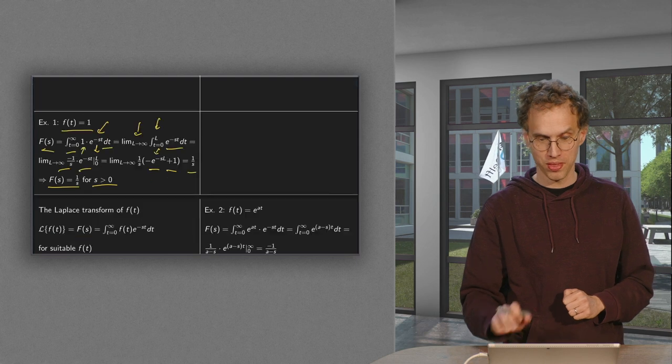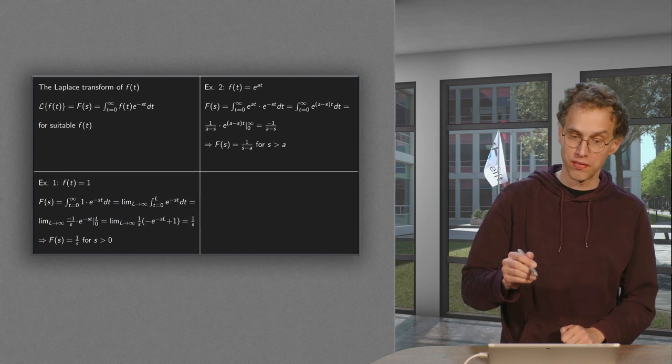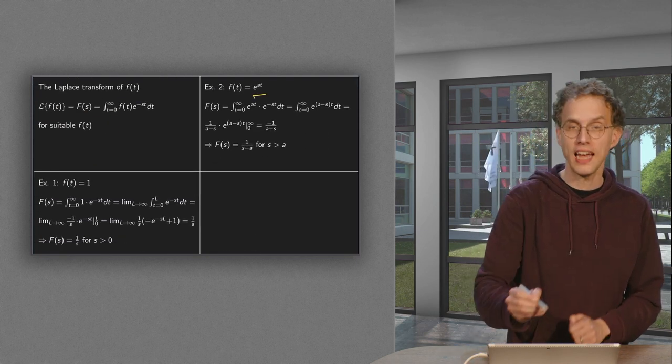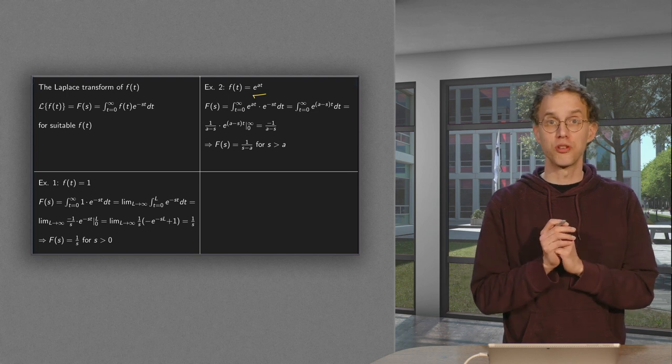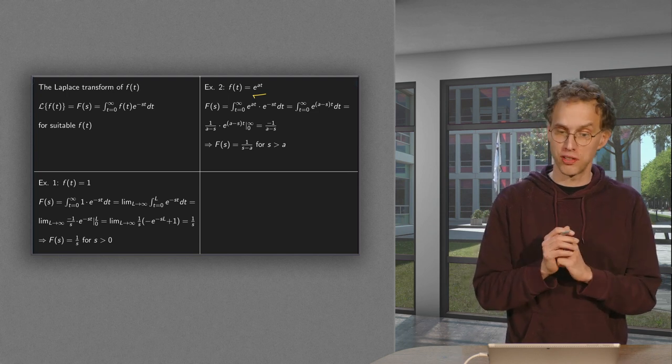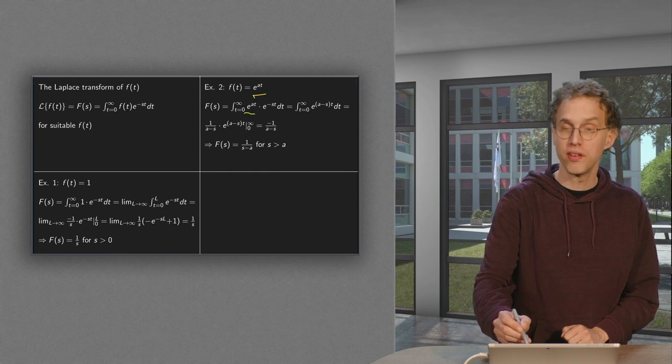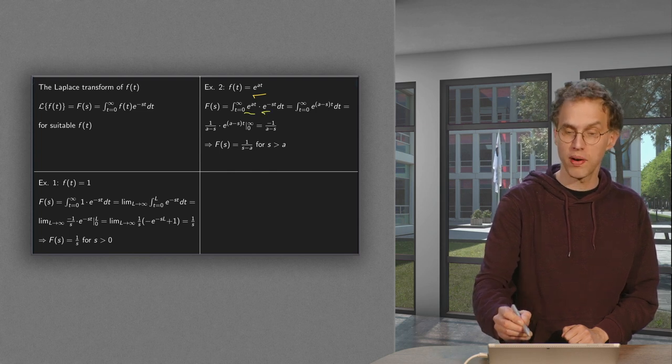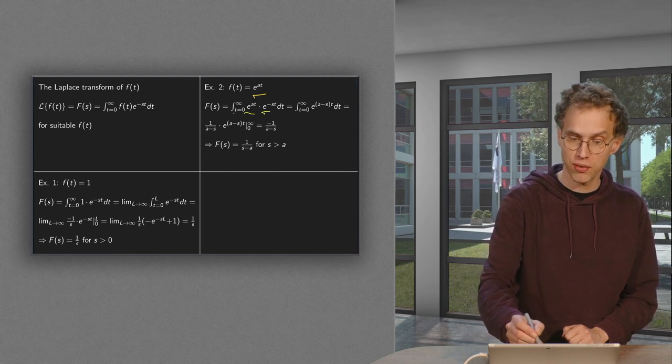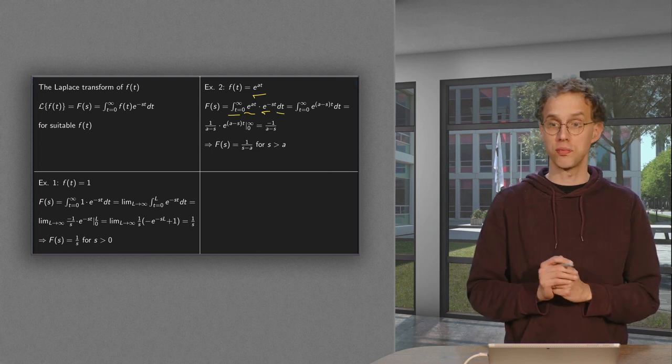Next example. What happens if we have f(t) equals e to the power at? Let's try to compute the Laplace transform of this function. So again we have our f, we multiply by e to the power minus st, we integrate from 0 to infinity with respect to t.